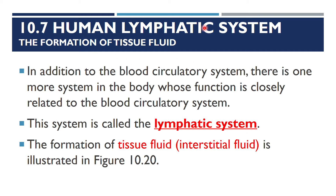10.7 Human Lymphatic System. First we have to look at the formation of tissue fluid. In addition to the blood circulatory system, there is actually one more system in the body whose function is closely related to it — this is called the lymphatic system. Next we are going to look at the formation of tissue fluid, also known as the interstitial fluid. 'Interstitial' — 'inter' means in between the tissues or the cells — so it is the fluid that is in between these cells.